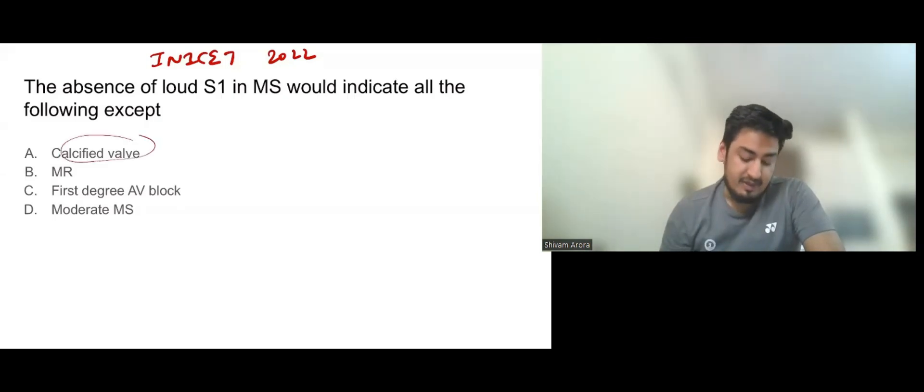Calcified valve: definitely soft S1. First degree AV block: as we know that in tachycardia there is loudest S1, in bradycardia there is softest S1. Or in short PR there is loudest S1, in prolonged PR there is softest S1. First degree AV block means prolonged PR, so softest S1.